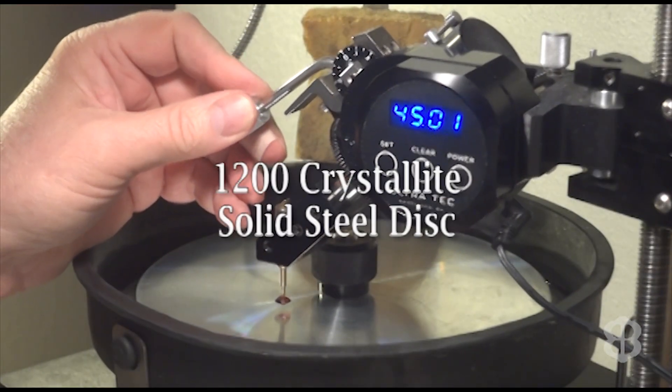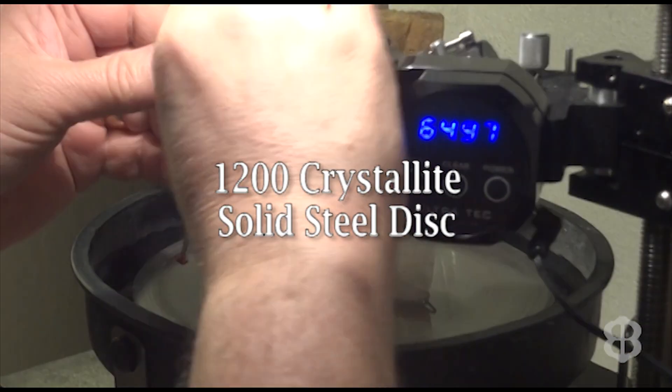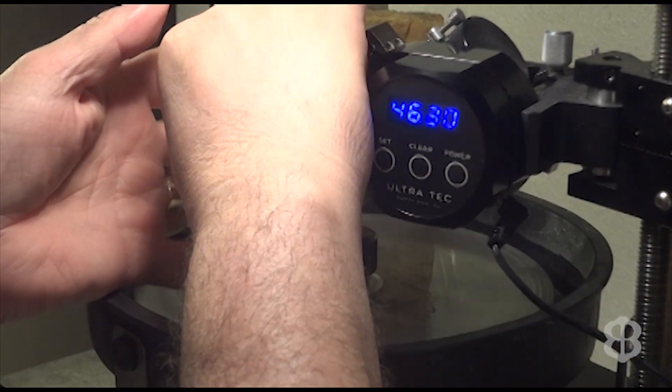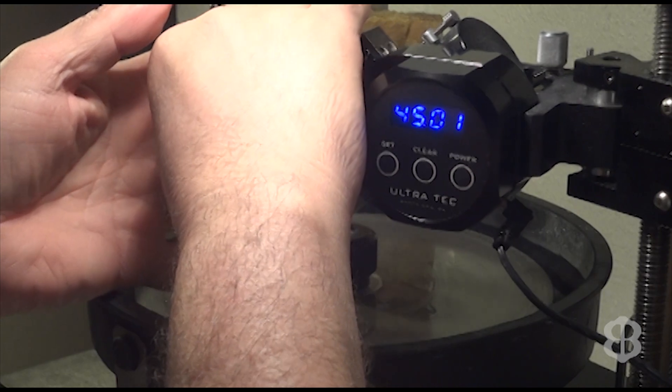I think I'll start with a 1200 crystallite. Got to check often to make sure we don't over cut, because we've got step cuts and we want to eyeball them until all the step cuts are about even.